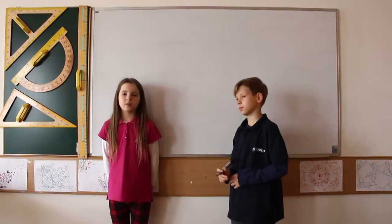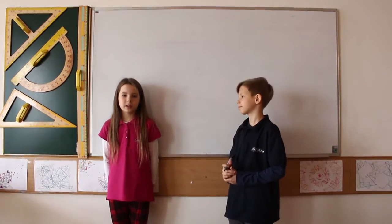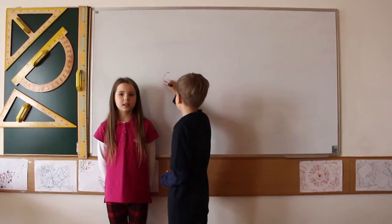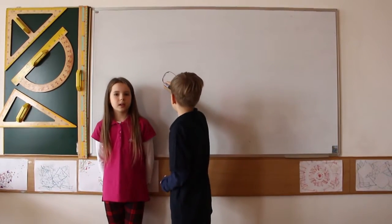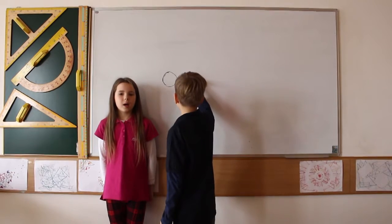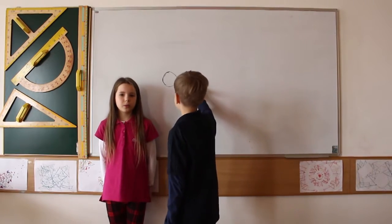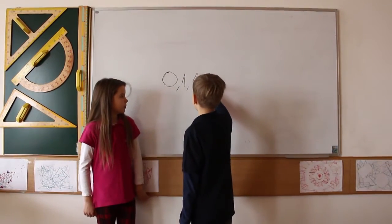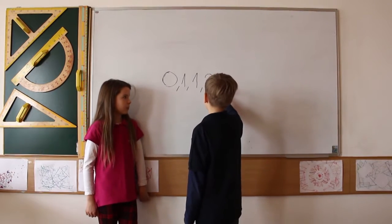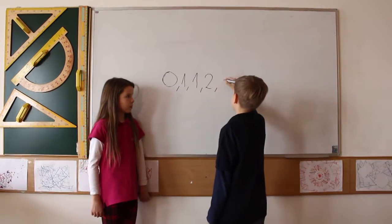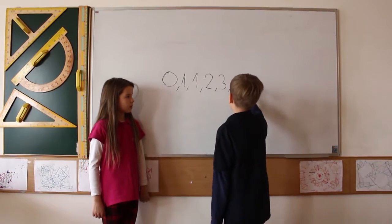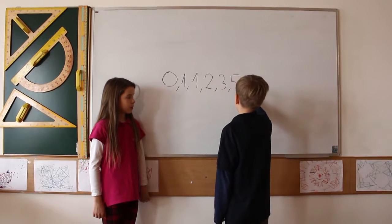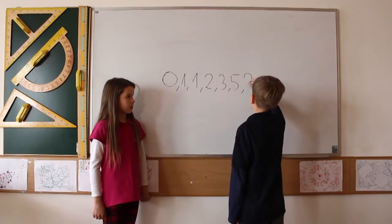What is the Fibonacci sequence? The Fibonacci sequence means that the first figure is zero, the second is one, and every other is the sum of the two previous ones. Zero plus one is one, one plus one is two, one plus two is three, two plus three is five, three plus five is eight.